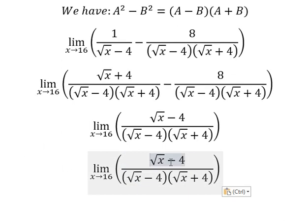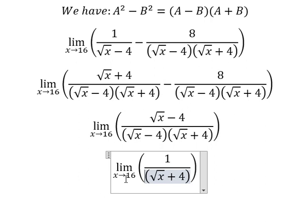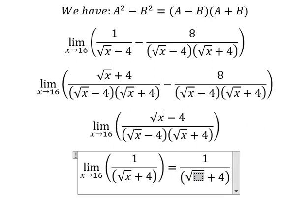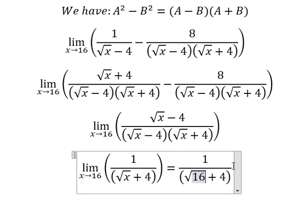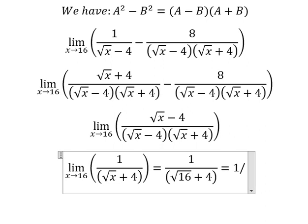So this simplifies to square root of x minus 4 divided by (square root of x minus 4)(square root of x plus 4). We can cancel the square root of x minus 4 terms, giving us 1 over square root of x plus 4. Now substituting x equals 16, we get 1 over square root of 16 plus 4, which equals 1 over 8.